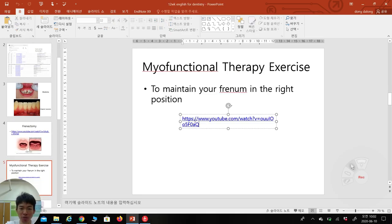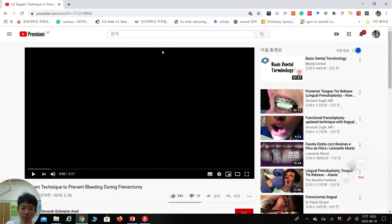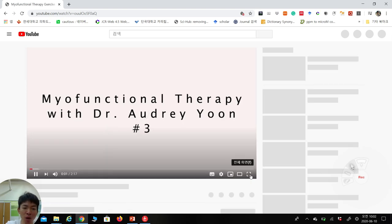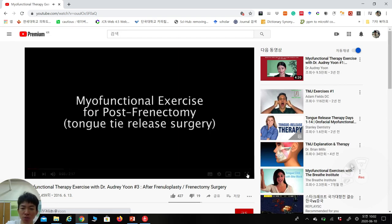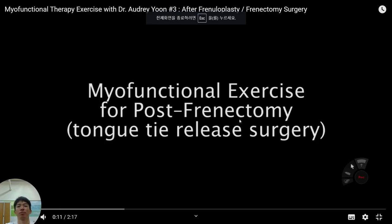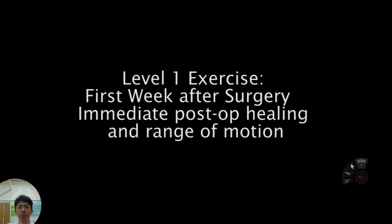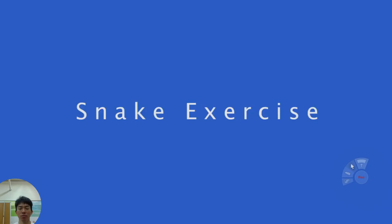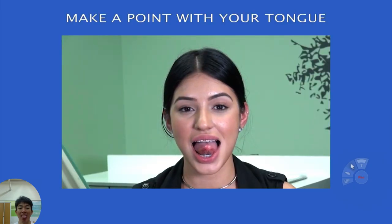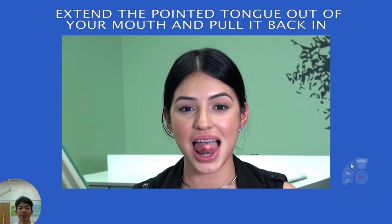Myofunctional therapy is a complicated term, but the basic concept is simple: move your mouth up, down, left, and right, using your tongue together. This is a myofunctional therapy exercise for post-frenectomy tongue-tie release surgery. Let's practice tongue exercises that help with tongue-tie recovery and establish proper posture and function. Level one exercises are for the first week after surgery — immediate post-op healing and range of motion. First, the snake exercise: make a point with your tongue, extend it out and pull it back in without letting the tip touch your lips. Repeat 25 times.